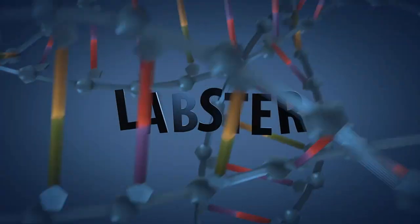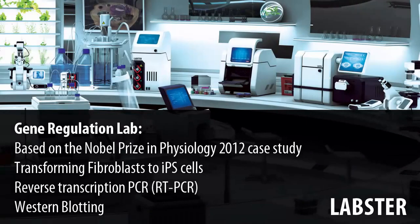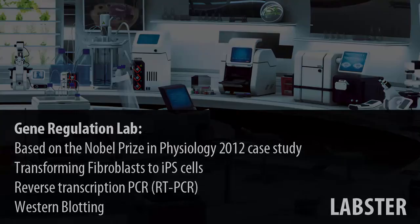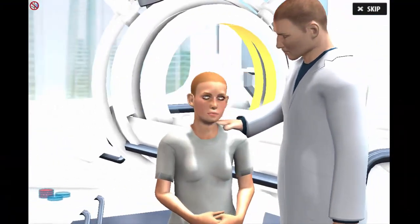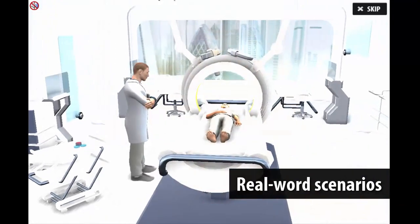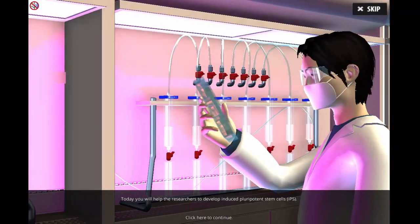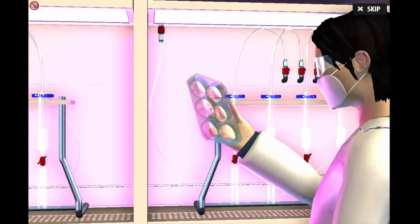Welcome to the Gene Regulation Lab, where students can learn standard techniques commonly used to analyze gene expression and about the epigenetic mechanism of gene regulation. The premise of the lab is to save a blind child by preparing iPS cells that will then be differentiated to retinal-pigmented epithelial cells for transplantation.